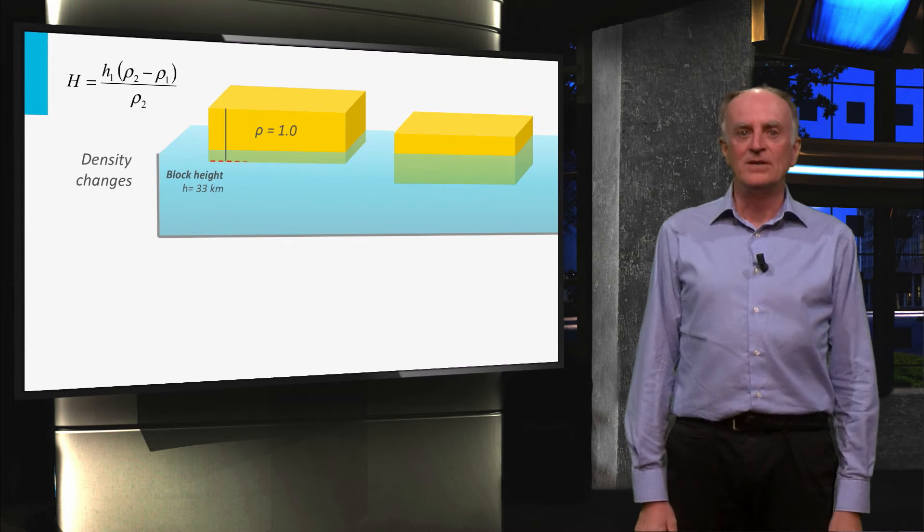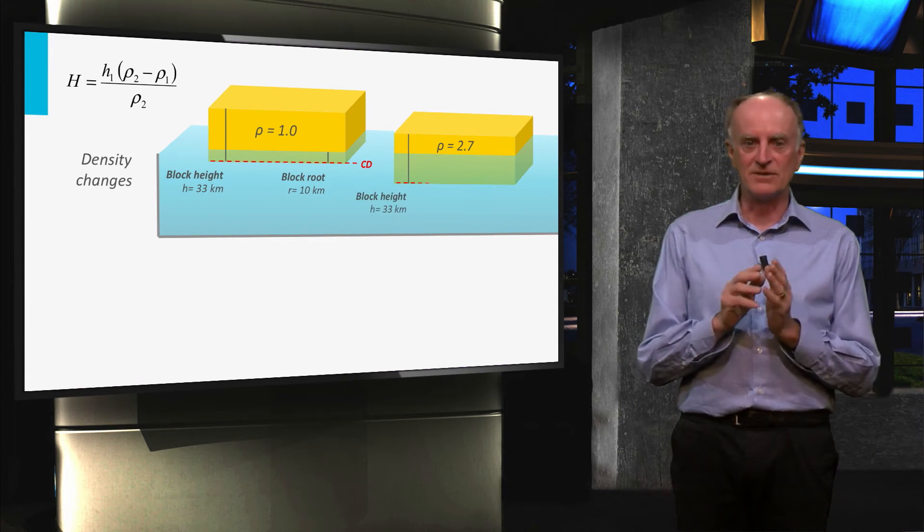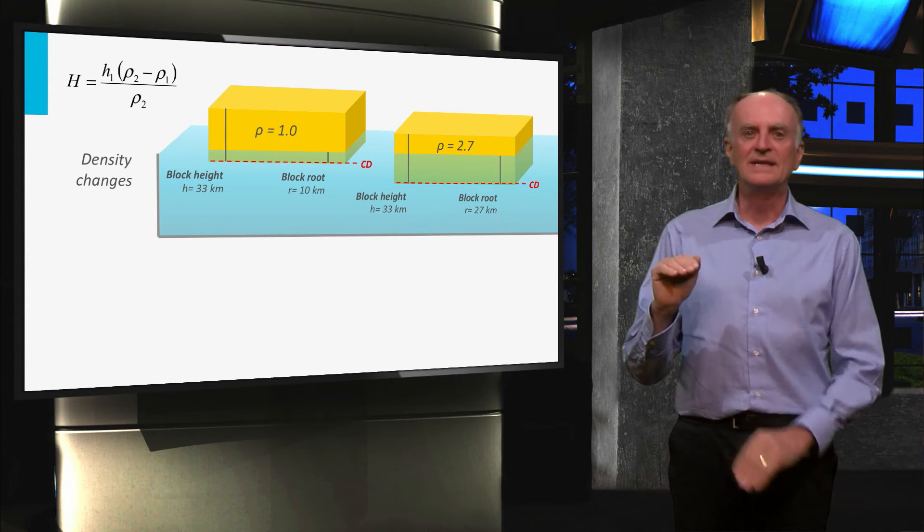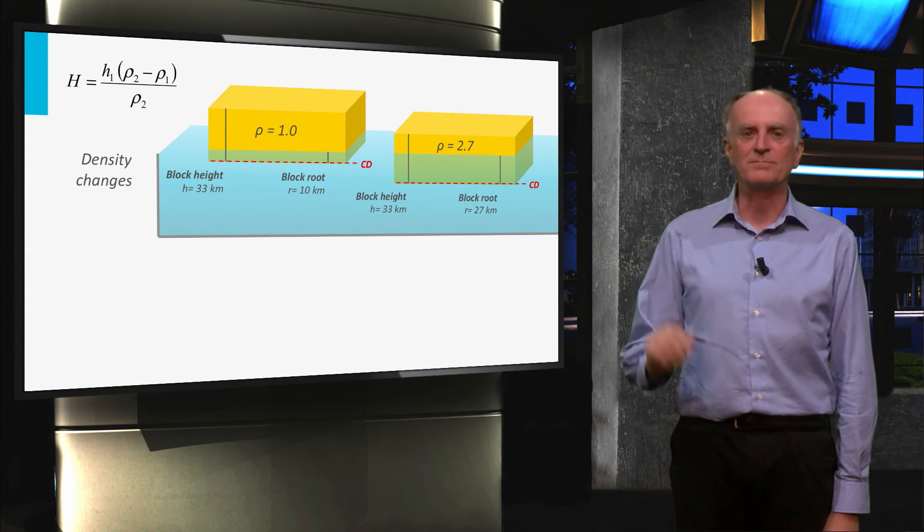In the upper part of the slide, you see that the higher the density of the floating block, the lower its topography. Indeed, heavy bodies tend to sink, decreasing the topography.